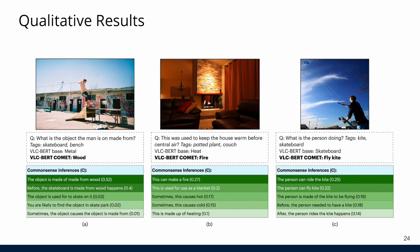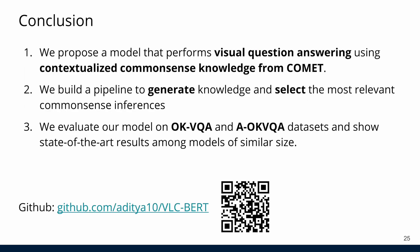Here are some qualitative examples. We see that common sense inferences may contain answers to the question, and the most relevant inferences have the largest attention weight. To conclude, we propose a model that performs visual question answering with contextualized common sense knowledge. We build a pipeline to generate knowledge and select the most relevant inferences that can be used to answer the question. We evaluate our model on OKVQA and AOKVQA tasks and show state-of-the-art results among models of similar size. You can find the code and supplementary materials on our GitHub page.